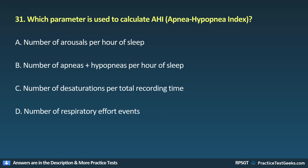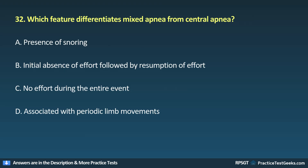Question 31: Which parameter is used to calculate AHI (apnea-hypopnea index)? A. Number of arousals per hour of sleep, B. Number of apneas plus hypopneas per hour of sleep, C. Number of desaturations per total recording time, D. Number of respiratory effort events.